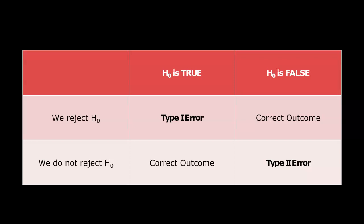So if we look at the cases where your null hypothesis is true, the correct outcome would be not rejecting the null. But if we were to reject it, that would be our type 1 error.